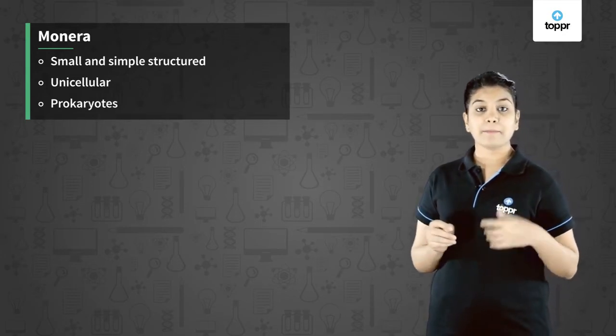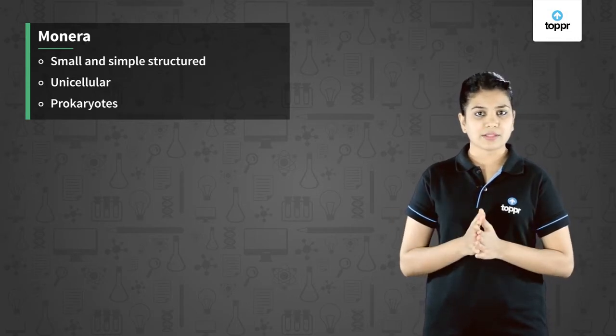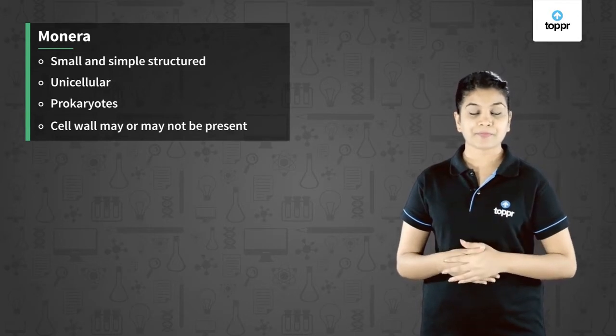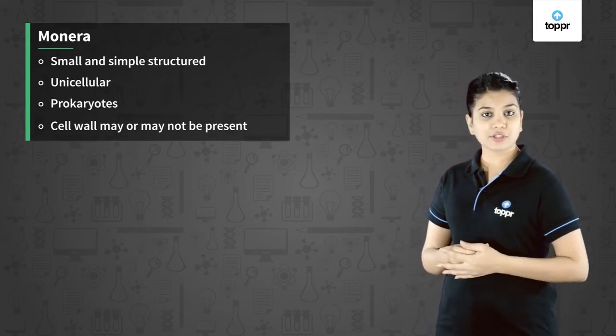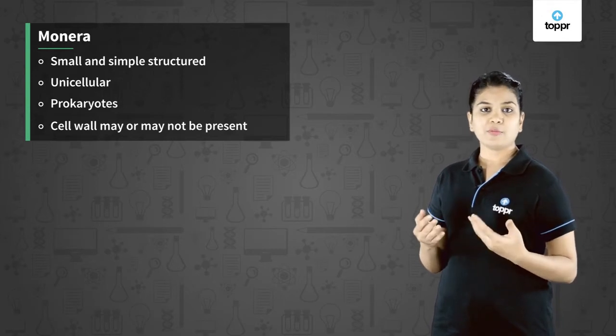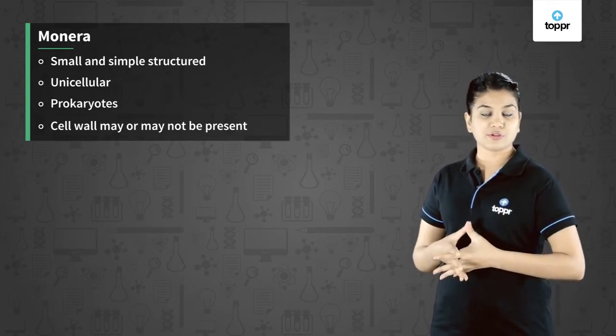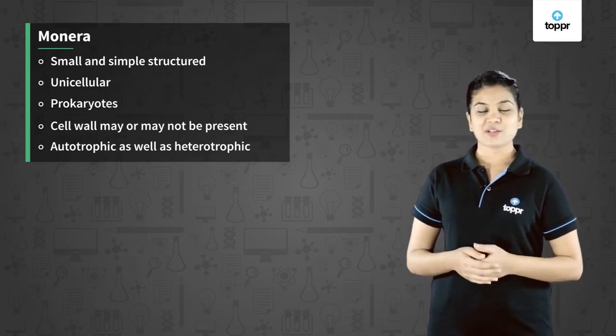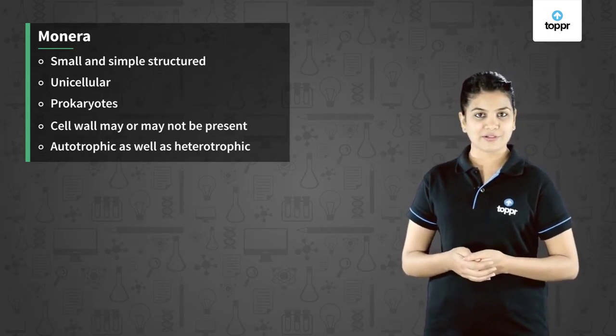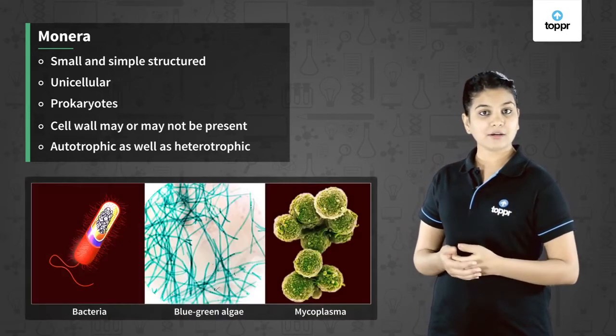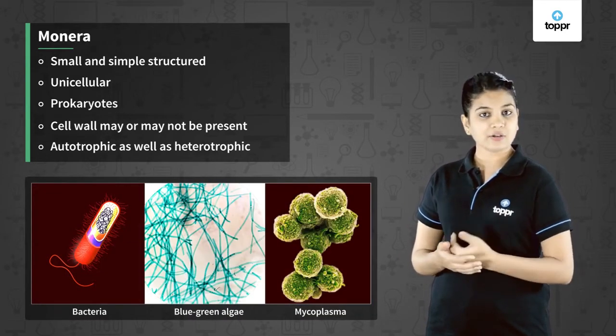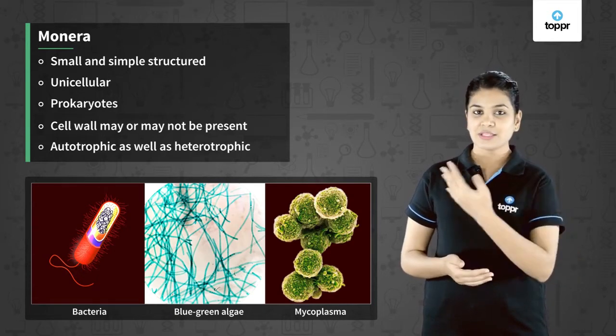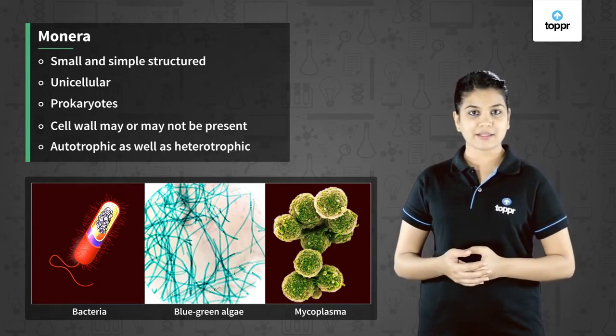In some organisms the cell wall is present and in others it is absent. The mode of nutrition can be both autotrophic as well as heterotrophic. Some examples of monerans are bacteria, blue-green algae or cyanobacteria, and mycoplasma.